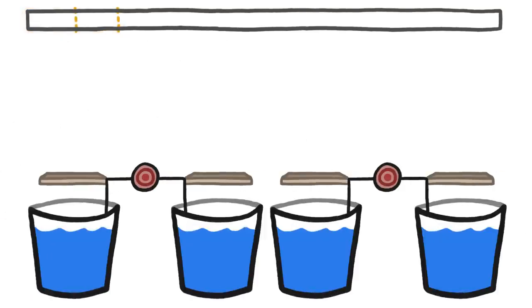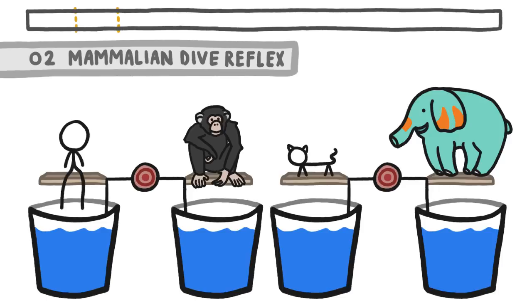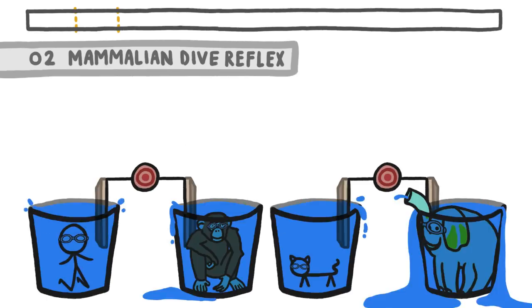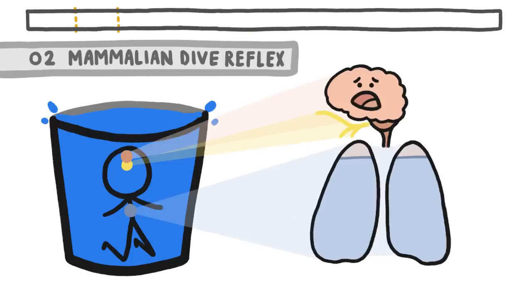The second survival system they hack is the mammalian dive reflex. It turns out that all mammals, and thus all humans, have developed an anti-drowning mechanism for when they unexpectedly find themselves underwater. When we get dunked, a branch of one of our cranial nerves senses the temperature and pressure change and alerts our brain to begin rationing oxygen.